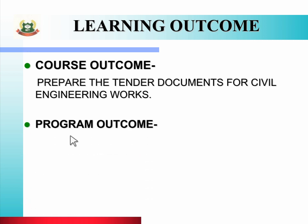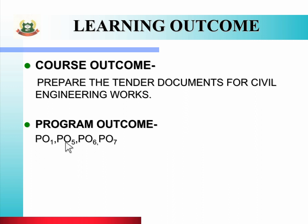Program outcome: इस practical से related program outcome है PO one, PO five, PO six and PO seven — जैसे कि basic and discipline specific knowledge, engineering practices for society, sustainability and environment, project management and lifelong learning. इन सभी POs का यूज करके आप यह practical study करोगे.